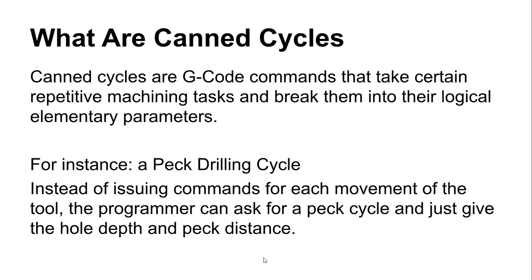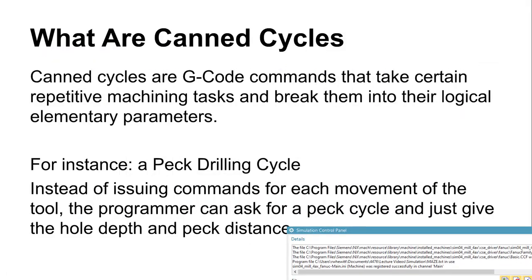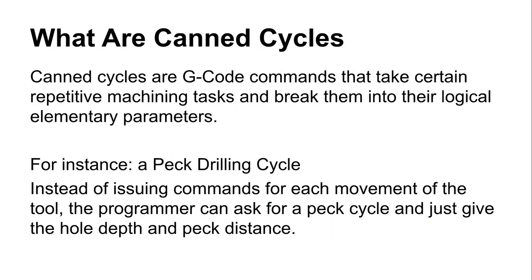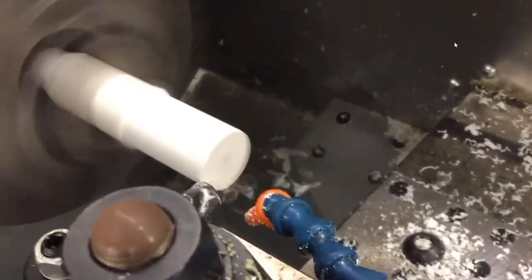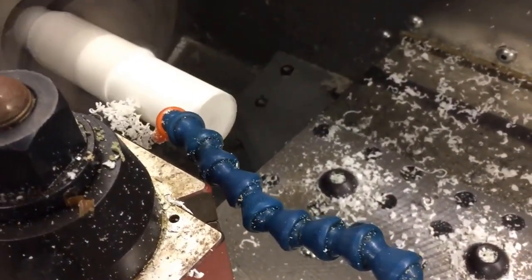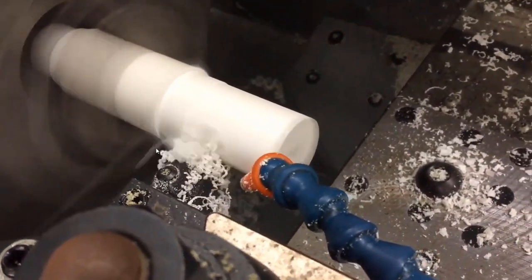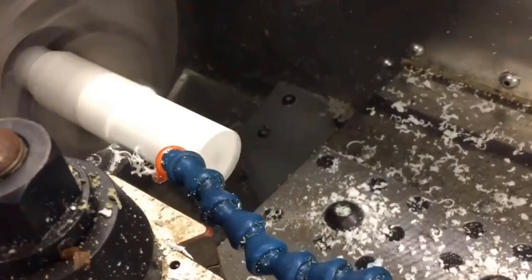Let's look at canned cycles. Certain operations become really obvious candidates for canned cycles. Here's a canned cycle on a lathe — this is a G71 cycle on Dwight's senior project. When you're turning on a lathe, you're making multiple passes, taking a little bit off with each pass, moving back and forth repeatedly.